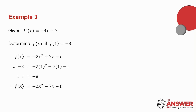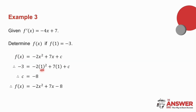They've given another piece of information: f(1) equals minus 3. In other words, when x is 1, y is minus 3. So substituting into f(x), in place of x goes 1 and in place of y goes minus 3, and I solve for c. And there I have determined f(x).